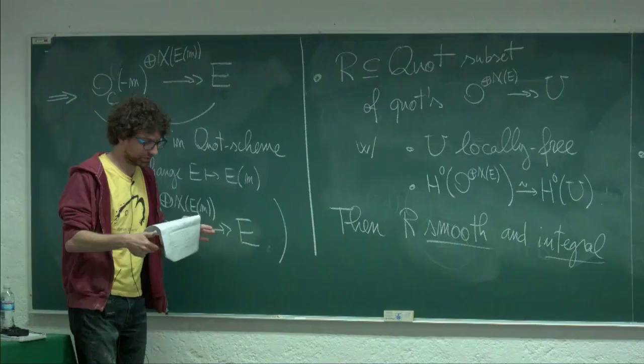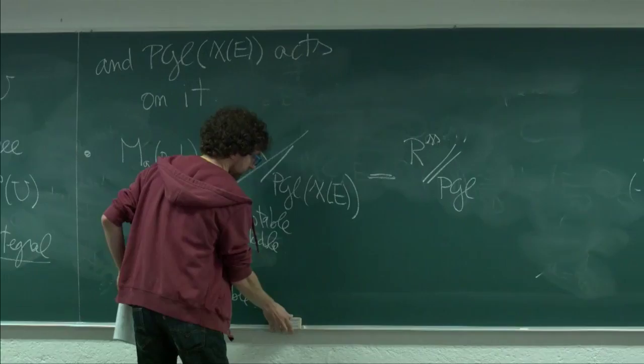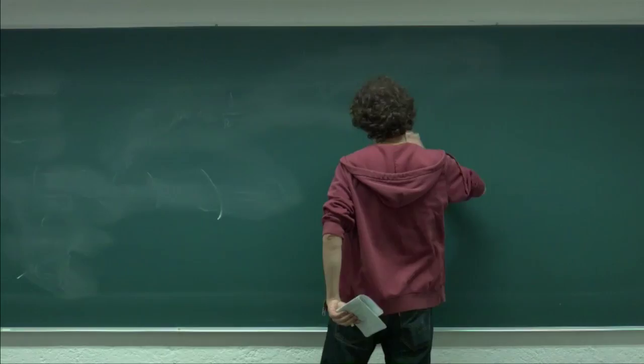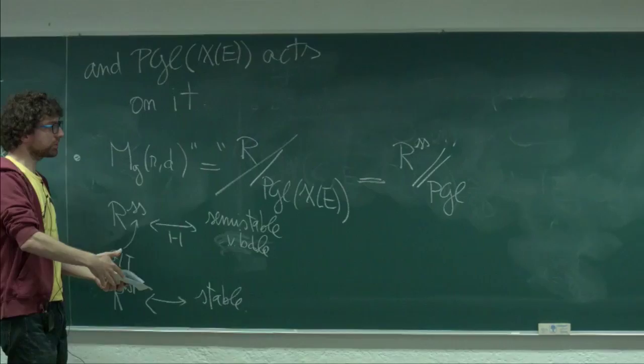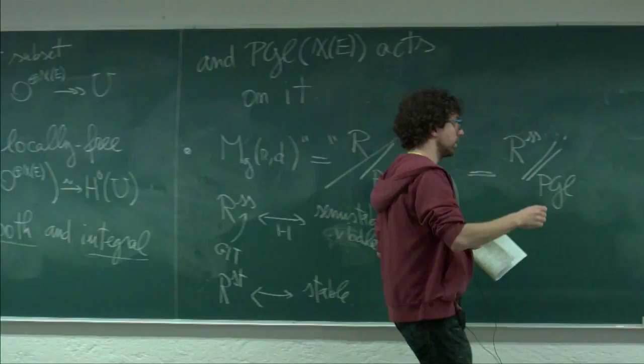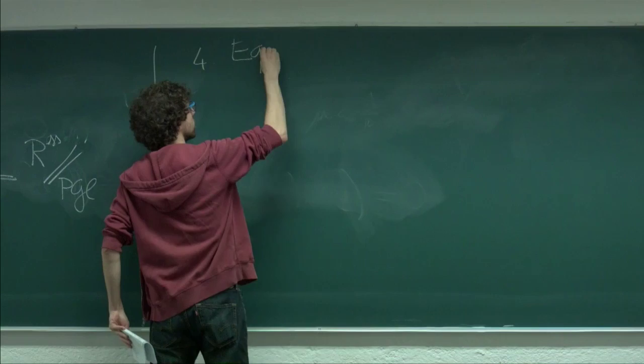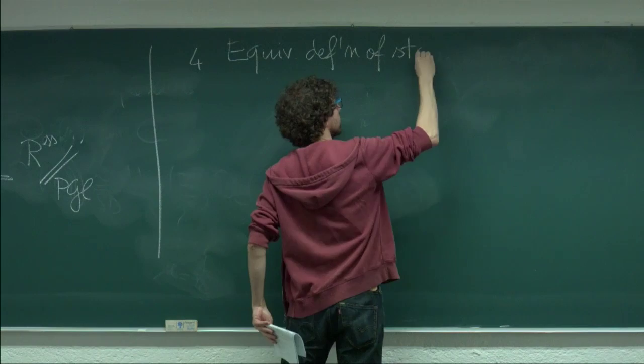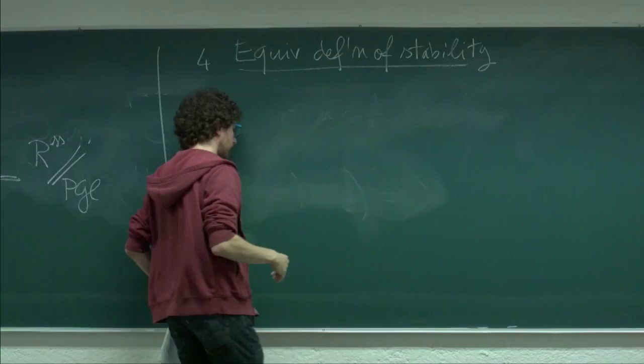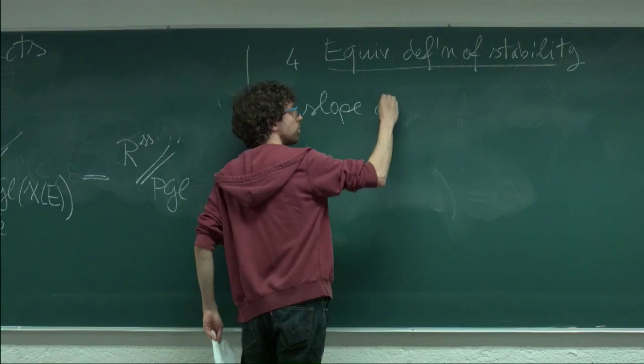Let's start the next part. Let me say briefly where we are. I'm not going to use GIT anymore. So let me just make a small last section: equivalent definitions of stability. I have a few of them. The first is the slope definition — the numerical definition we gave.